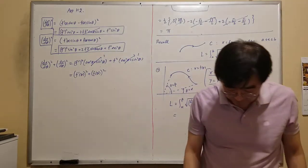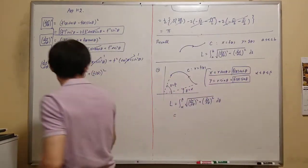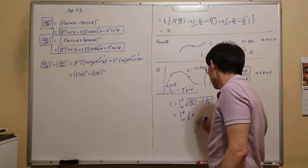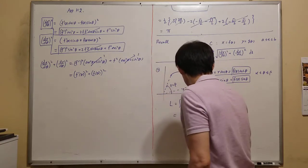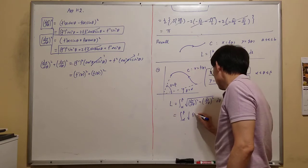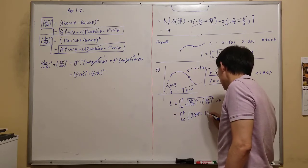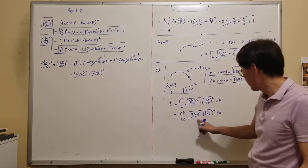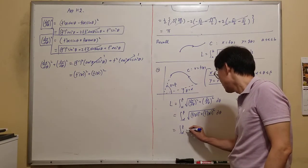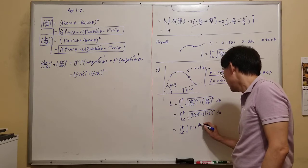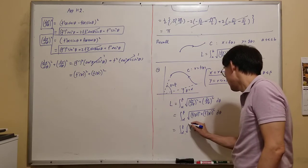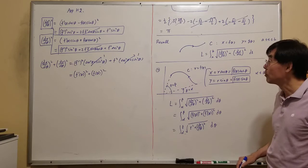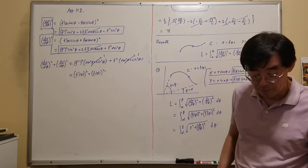Therefore the arc length formula in polar coordinates is: L = ∫_α^β √[f(θ)² + f'(θ)²] dθ, or equivalently, L = ∫_α^β √[r² + (dr/dθ)²] dθ.